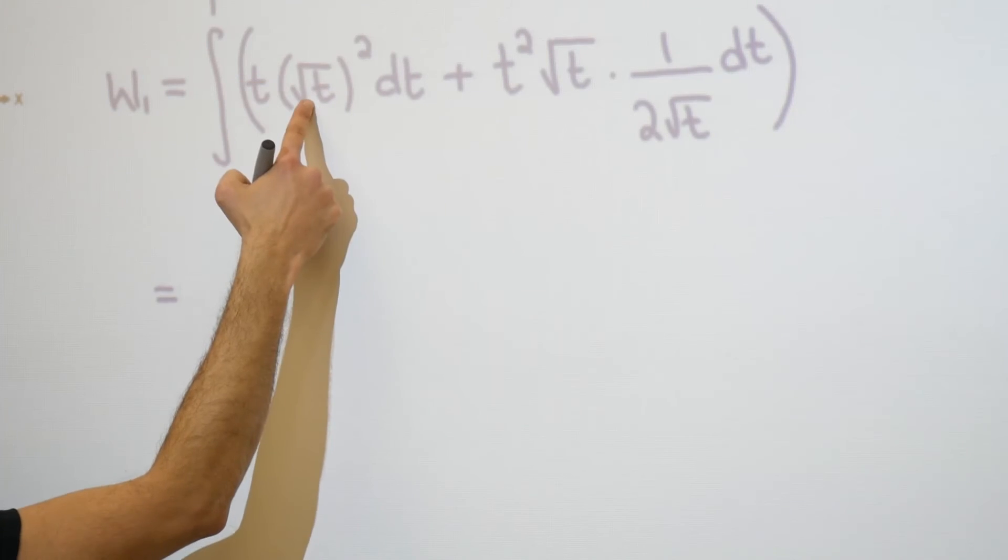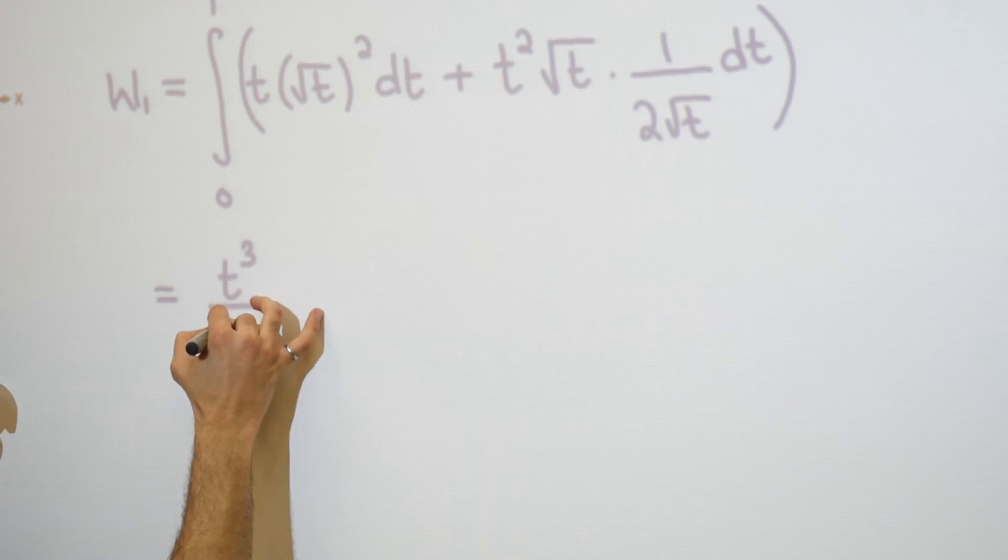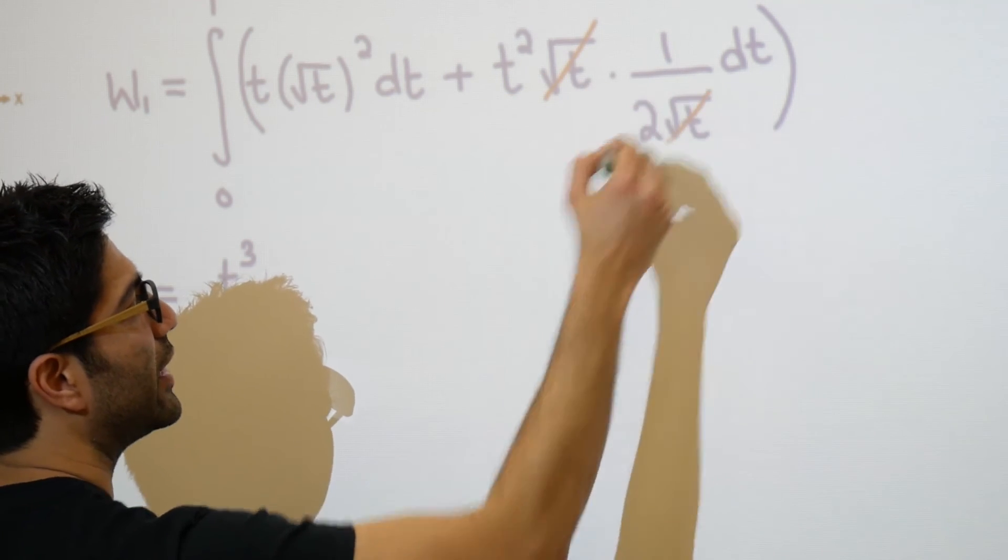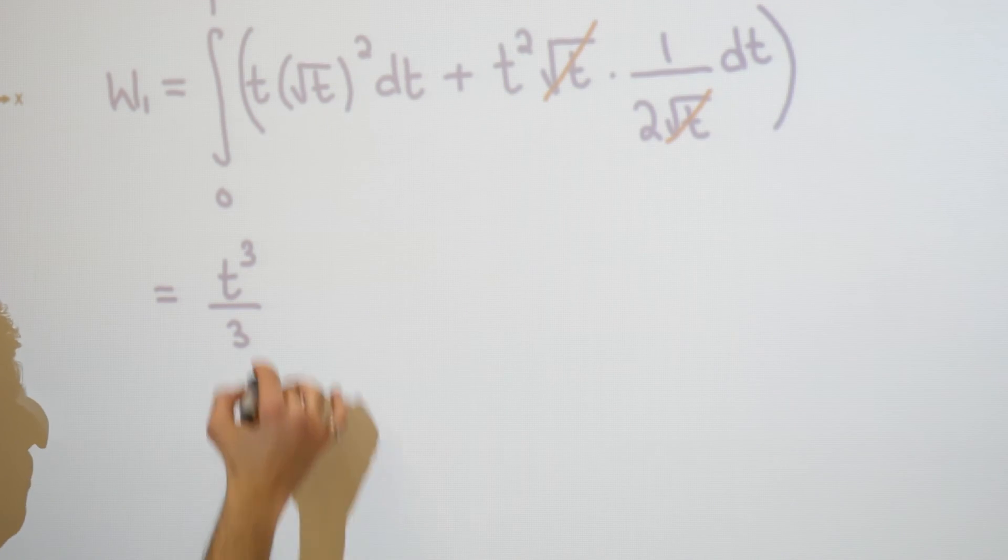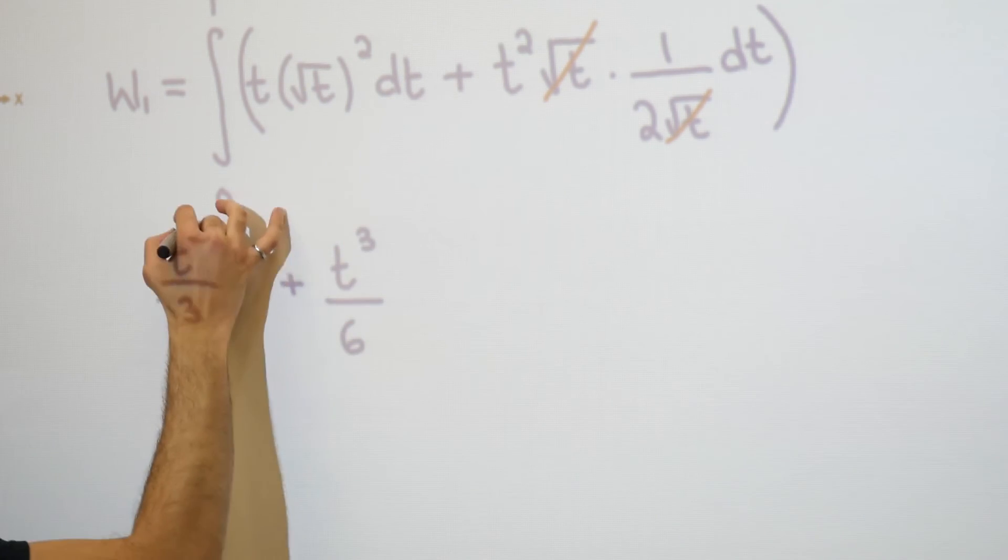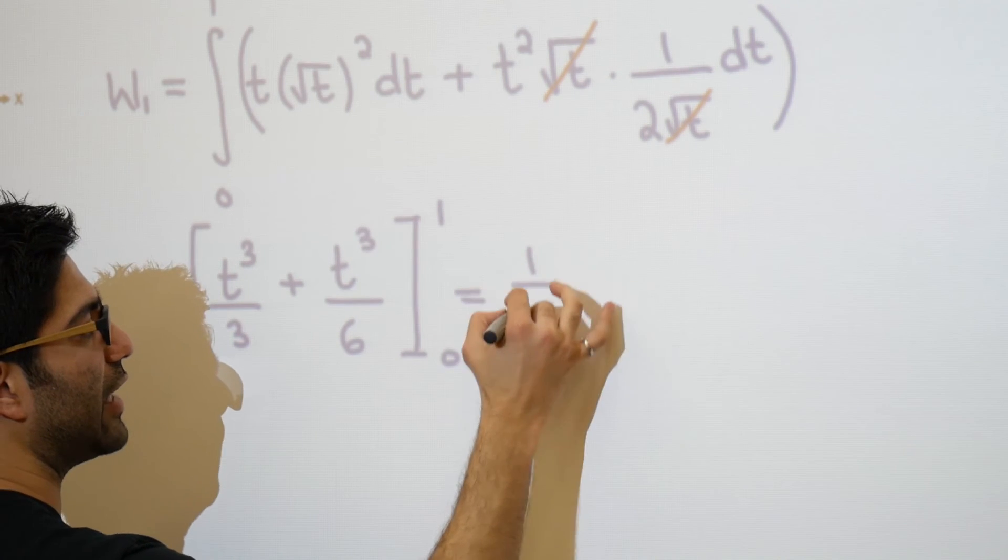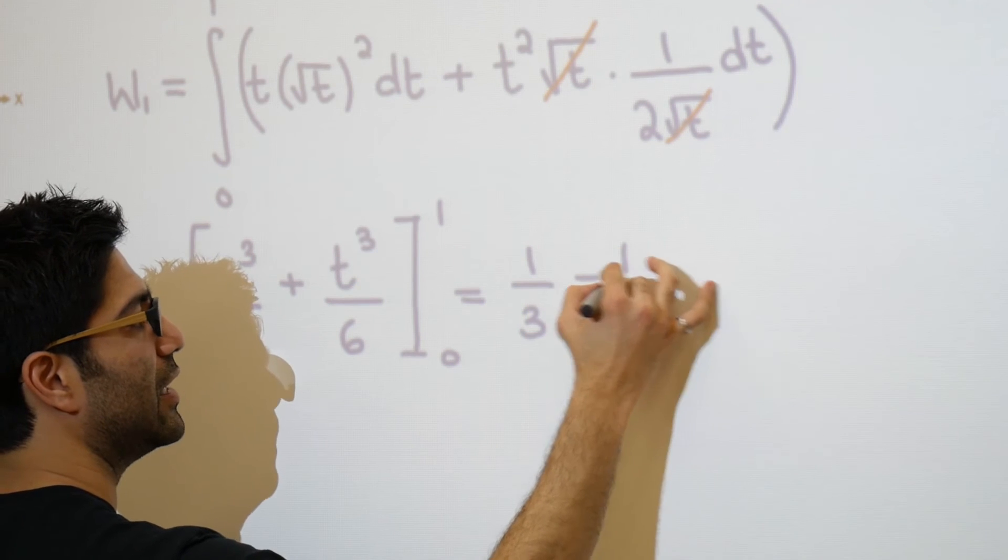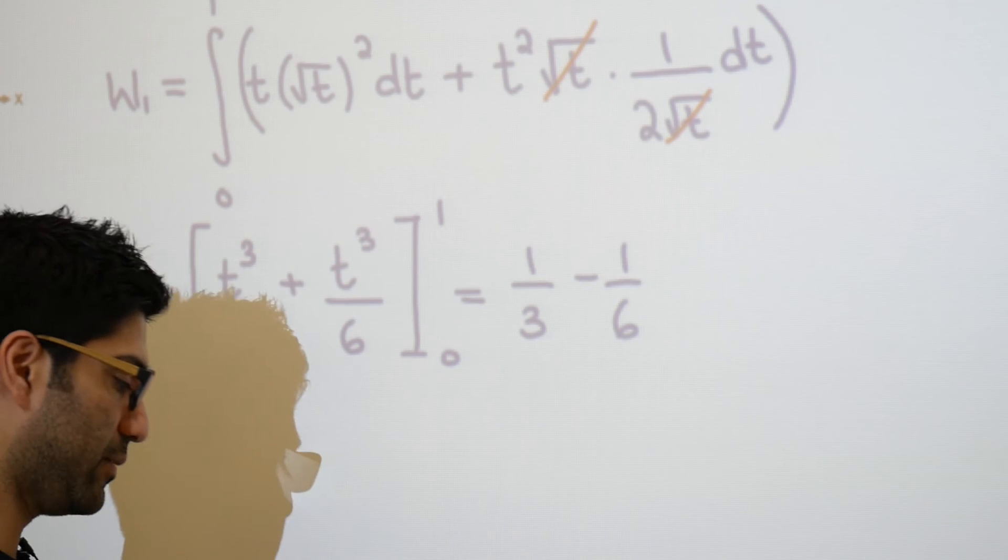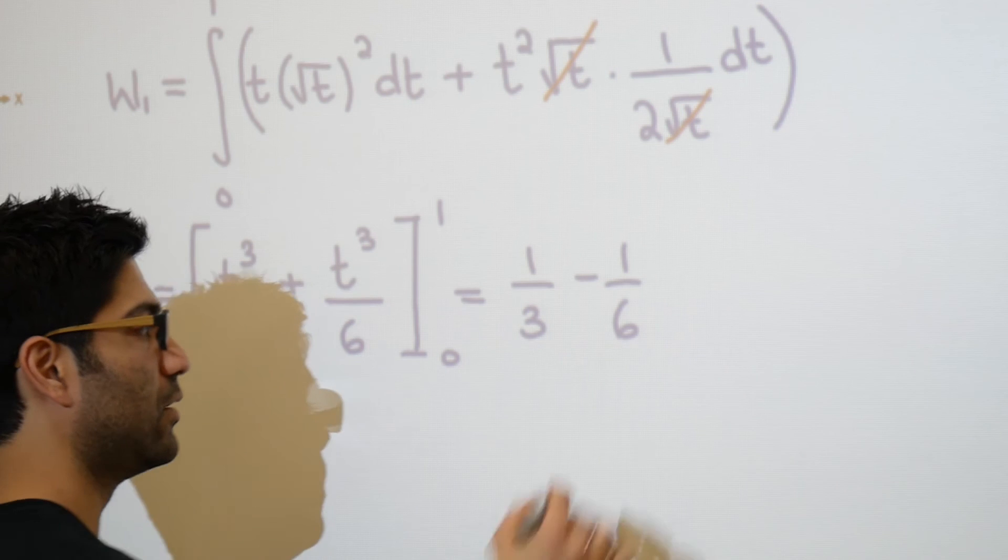So this is going to become t times t, t squared. Integrating t squared gives us t cubed over 3. Over here, you should realize that these guys cancel out quite nicely. And once again, you're left with t squared over 2, which integrated gives us t cubed over 6. And we're going to let this go from 0 to 1, giving us a final answer of a third minus a sixth or 1 sixth.